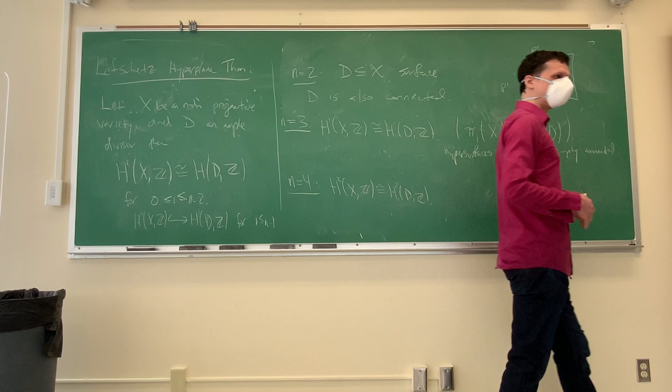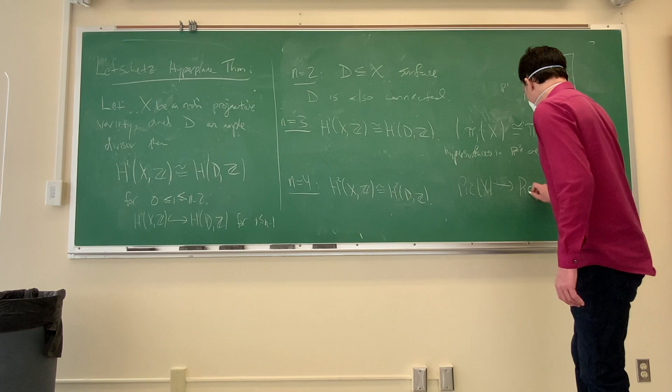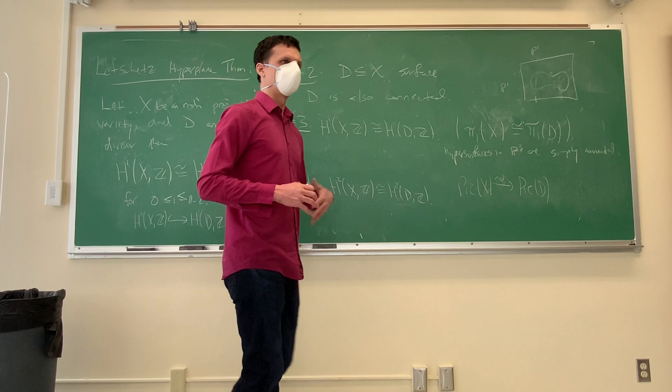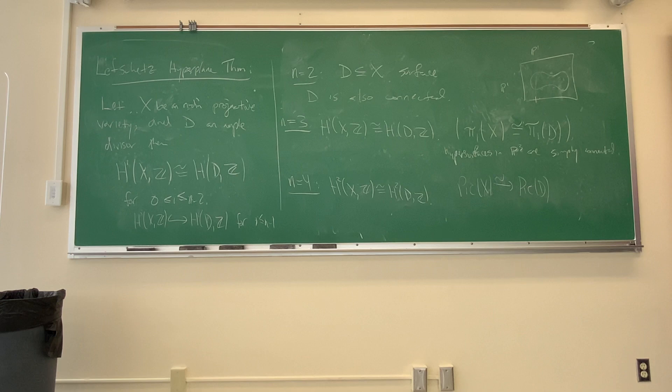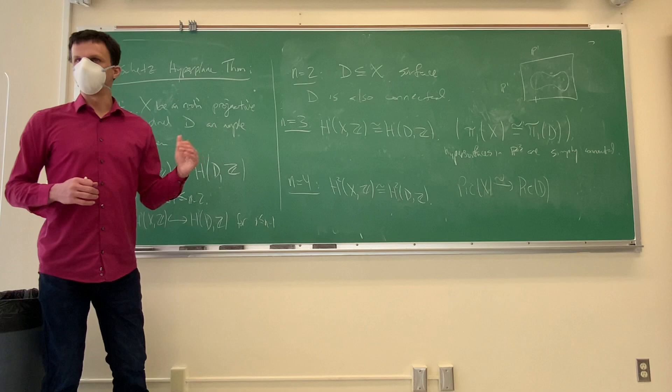Thinking about this algebraically, we get a restriction map from Pic(X) to Pic(D), which is an isomorphism. So if I have a threefold in P^4, its Picard group is generated by the hyperplane section. Because the Picard group of P^4 is generated by one element, the hyperplane section, the same will hold for any divisor inside X.